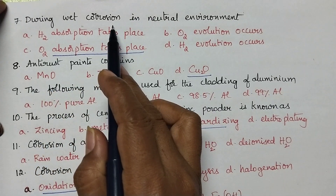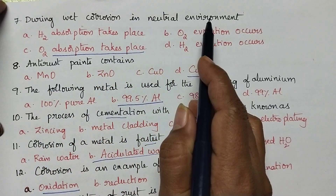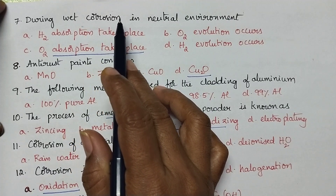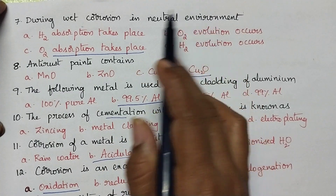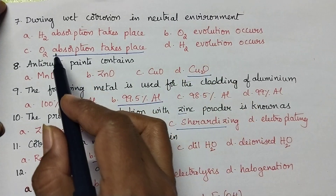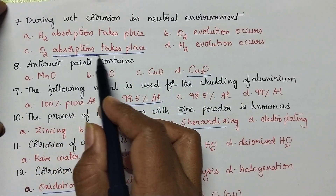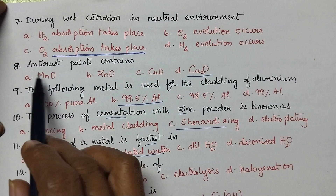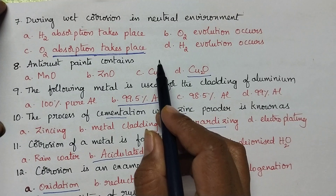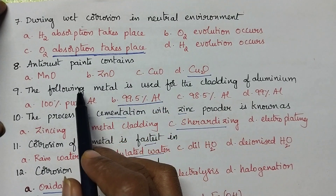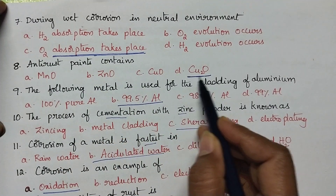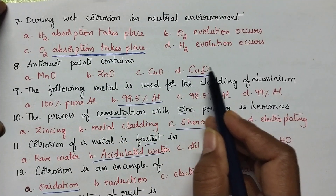During wet corrosion in a neutral environment — wet corrosion is also called electrochemical corrosion — it may take place either in the acidic or neutral environment. In the neutral environment, generally absorption of oxygen gas takes place. Anti-rust paints generally consist of cuprous oxide.